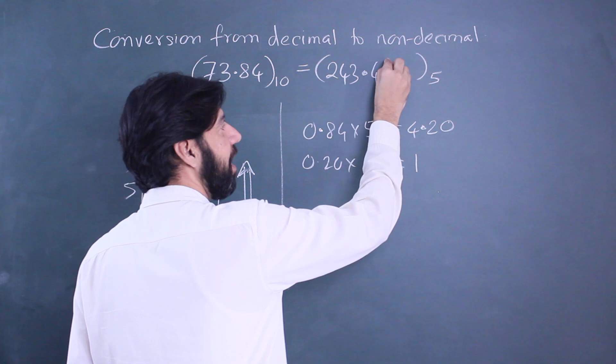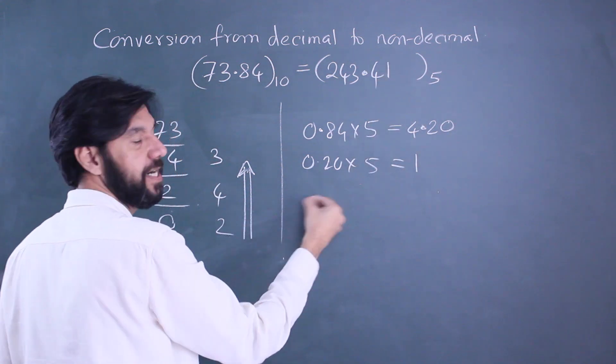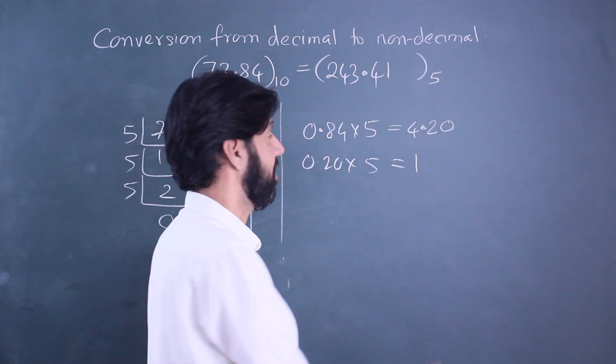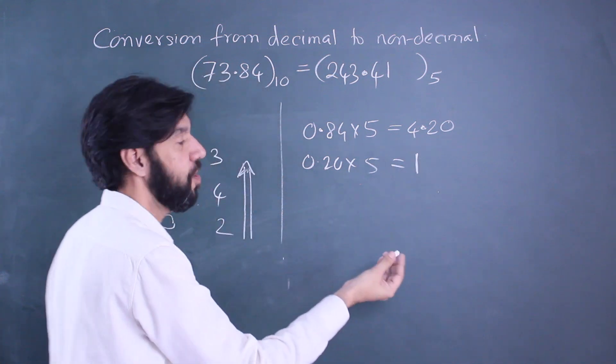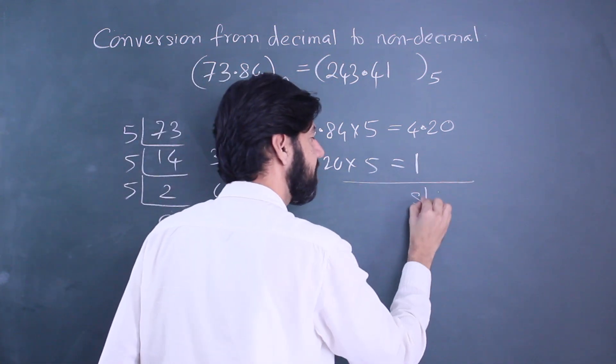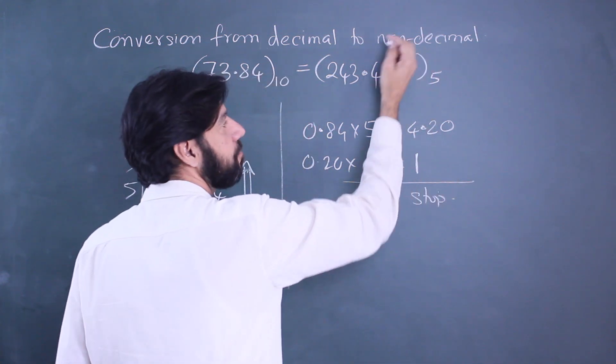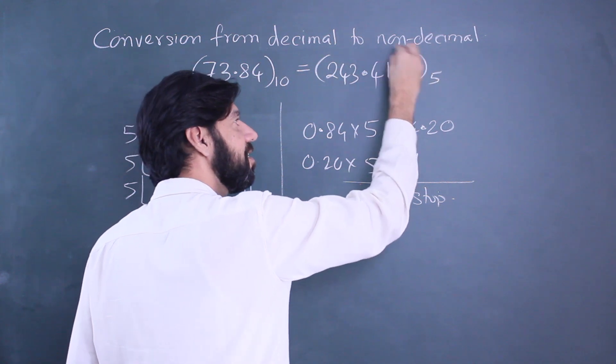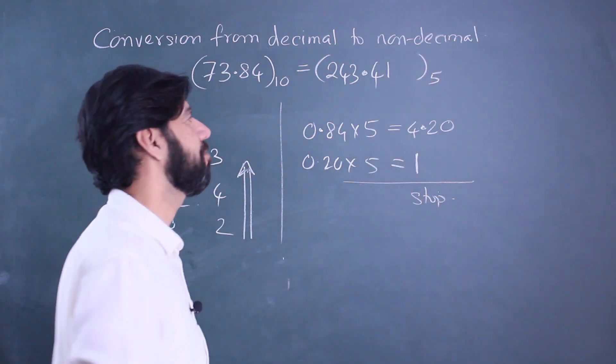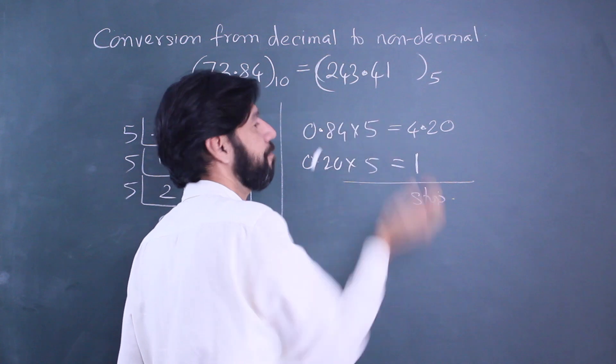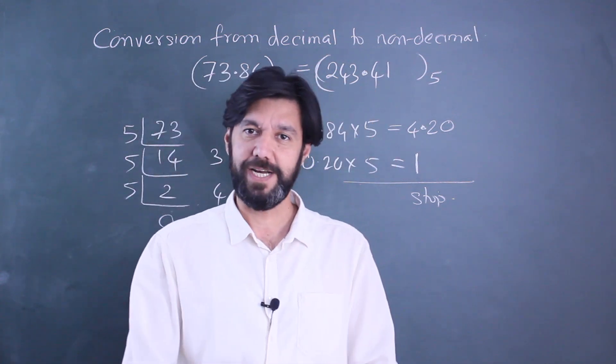So the integral part is 1 and there is no decimal part. The answer that I've got is an integer, so the process stops as I said it would. This is not a recurring number, it's not a non-terminating number. It just stops at 243.41.